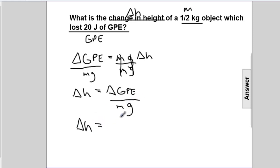Now we'll solve with numbers. The change in GPE is negative 20 joules. The mass is one-half kg times g, which is 9.8 meters per second squared.